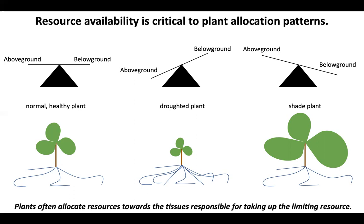I want to emphasize: plants often allocate their resources towards the tissues responsible for taking up the limiting resource. So in droughts, we might allocate more to the roots to take up more water. If we're in the shade, we'll allocate more in the leaves to take up more light.